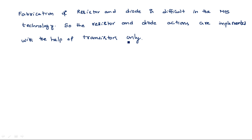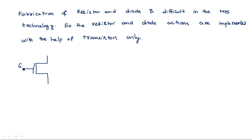Whatever action we require with the help of diodes or resistors will be accomplished only with the help of transistors. In the common source stage with diode-connected load, we use an NMOS transistor. Previously we used a resistor as load, but since resistor fabrication is difficult, we use a MOS transistor instead. To give high output impedance, the gate terminal should be short-circuited to the drain.